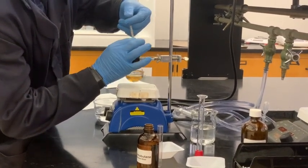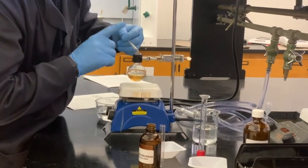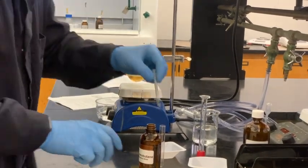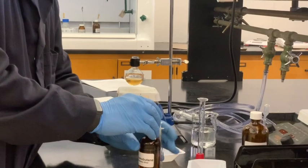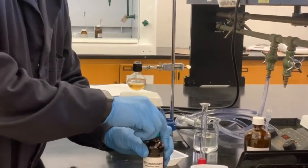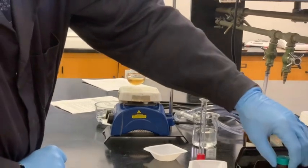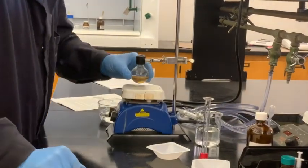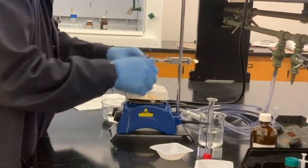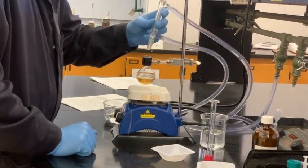That was almost exactly 0.6 milliliters. So you want to make sure you look up the density of the bromobutane to figure out exactly how many grams and thus how many moles you were working with. But once we get that in there, we just replace the reflux condenser.